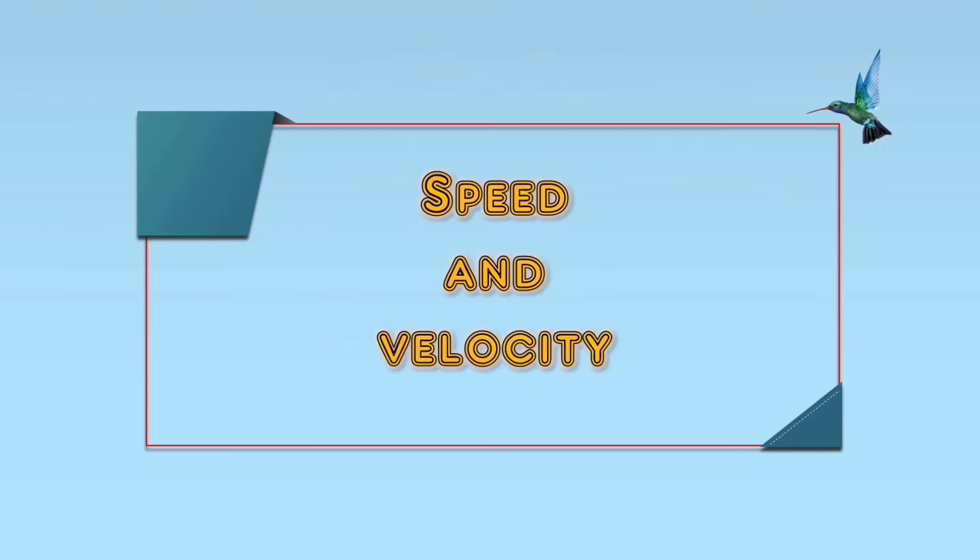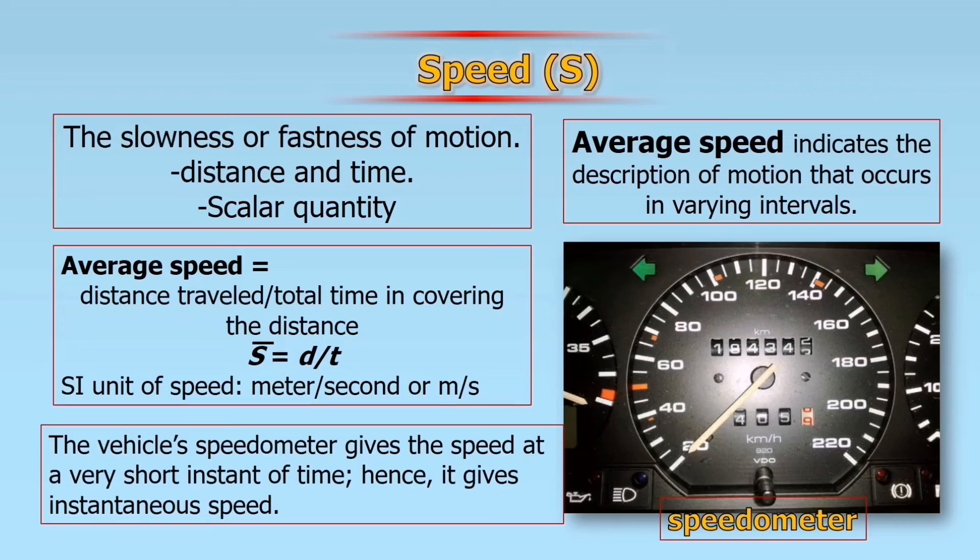How about speed and velocity? Speed indicates the slowness or fastness of motion. There is distance and time, but there is no direction in speed. In getting the average speed, we have a formula: distance traveled divided by time in covering the distance. The SI unit of speed is meter per second or m/s.